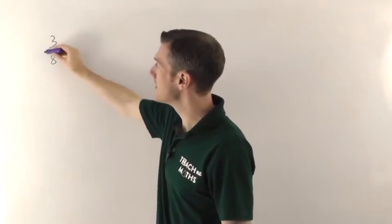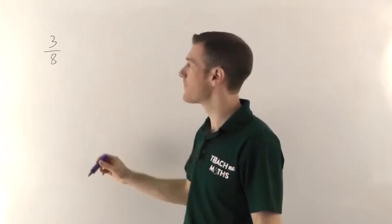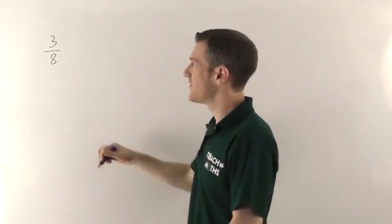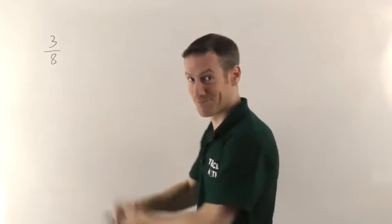This means 3 divided by 8. The line in the middle means division, means divided by. So if you just divide 3 by 8, you can work out what it is as a decimal. Let me show you how.